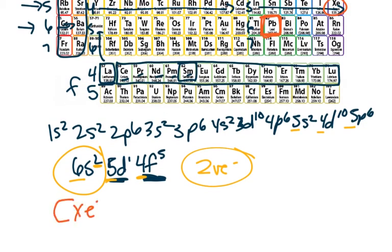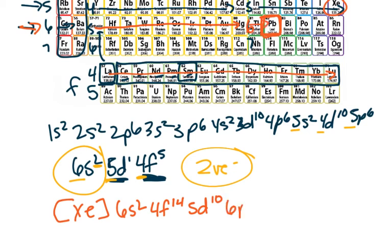So noble gas configuration, Xe. And then I would start here. So that's 6S2. I'd go all the way across my Ds and all the way across my Fs. So that's 4F14. And then that's 5D10. And now I'm back here at 6. So 6P2.